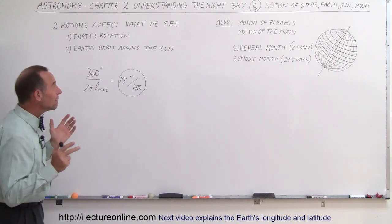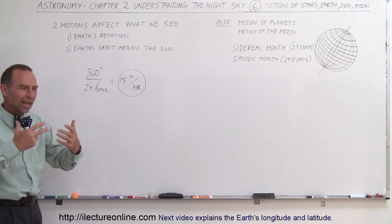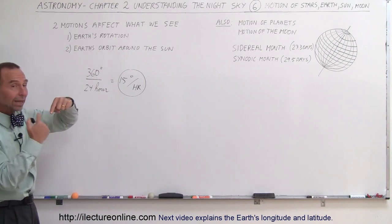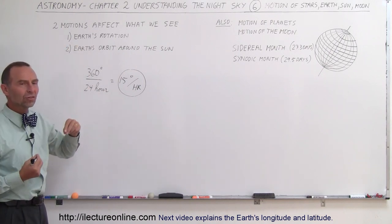So, the two main motions that we should be concerned about, in order for us to understand how to locate things on the celestial sphere, are one, that the Earth is rotating, and two, that the Earth orbits around the Sun.